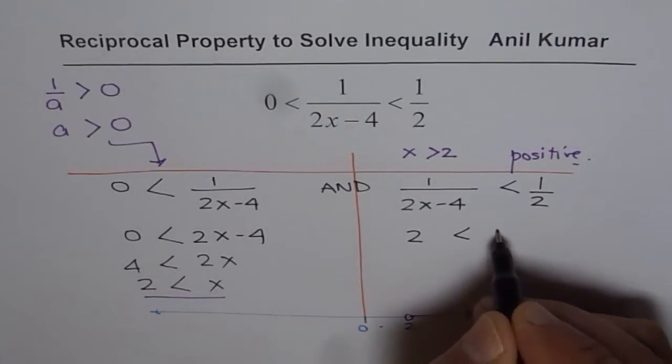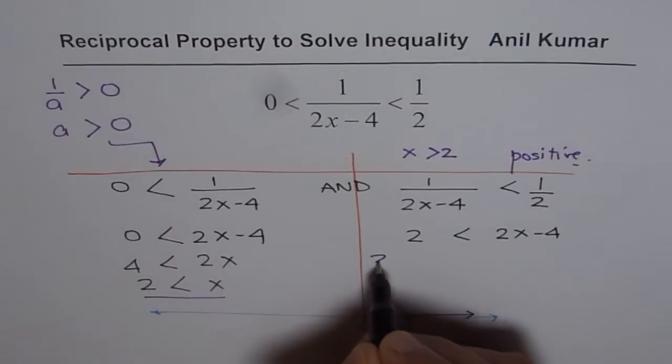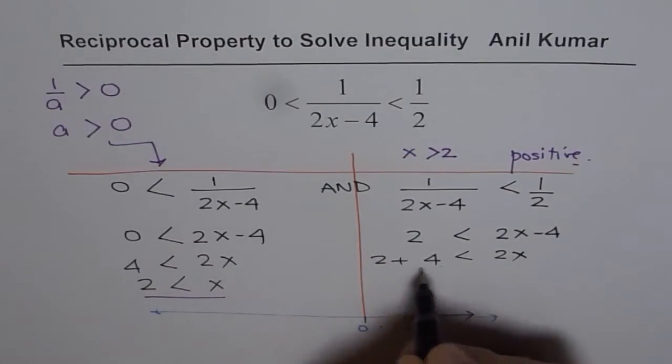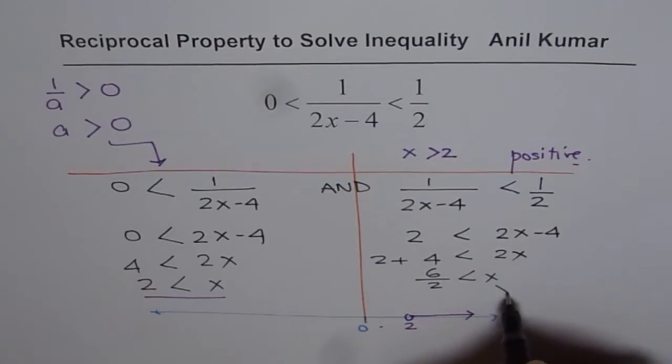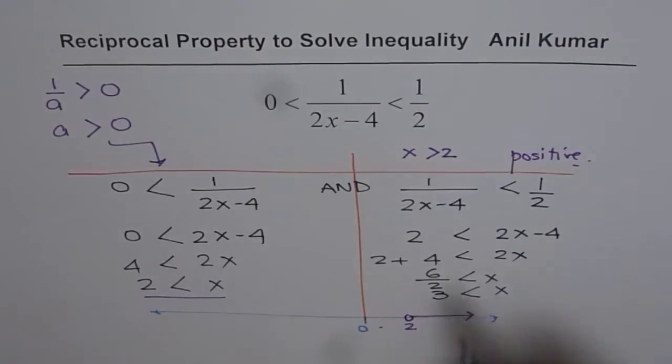We get 2 < 2x - 4. Bringing 4 to this side: 2 + 4 < 2x, which is 6 < 2x. So 6/2 < x, or x > 3.